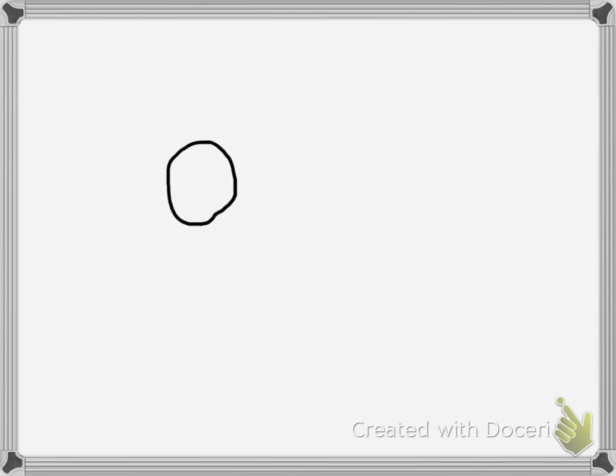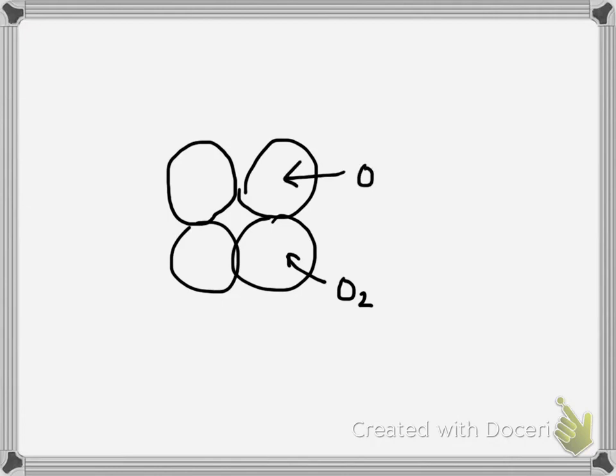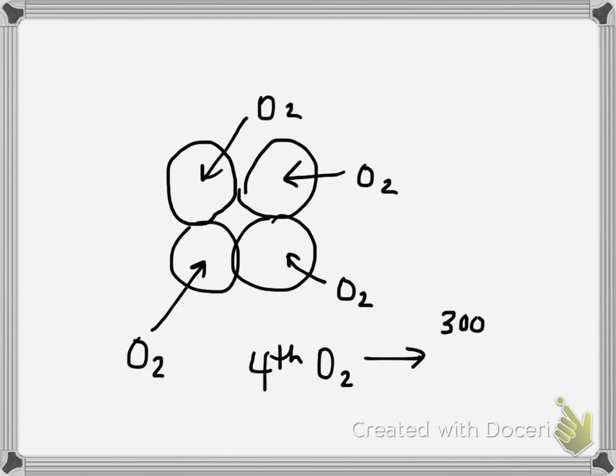So keep in mind, this is a good problem because it makes you think about cooperativity. The first O2 that binds hemoglobin goes on with relatively low affinity, but after that binds, it increases the affinity for the next hemoglobin to come on, and that increases the affinity for the next hemoglobin to come on, and that increases the affinity for the next hemoglobin to go on so that the fourth, or sorry, the fourth oxygen to go on. Pardon the mistake. So by the time the fourth oxygen comes on, that binds hemoglobin with 300 to 400 times more affinity than that first oxygen.